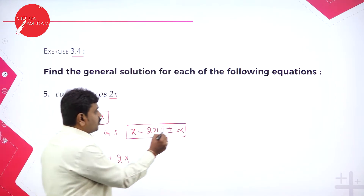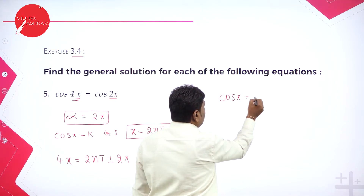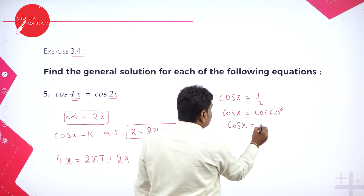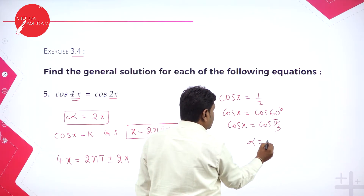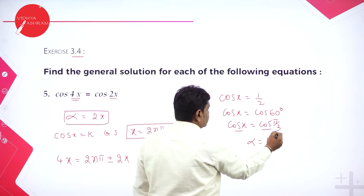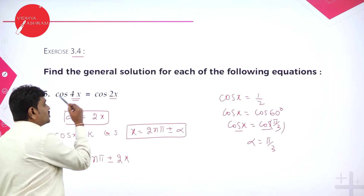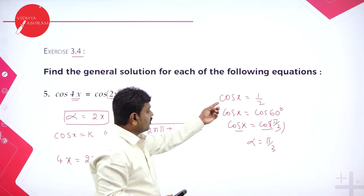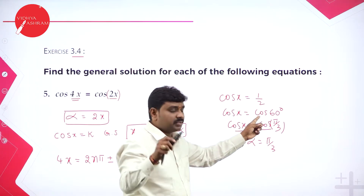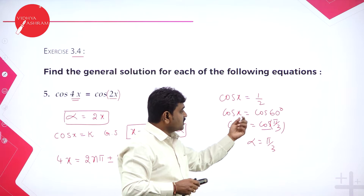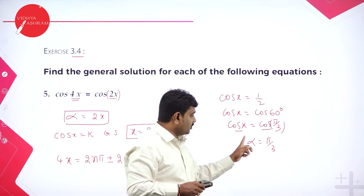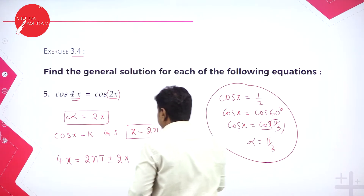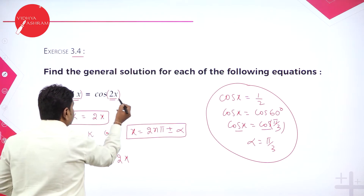To clarify: if cos x equals one-half, you can write this as cos x equals cos 60 degrees, or cos pi by 3, so alpha is pi by 3. Here cos equals cos of some angle. Similarly, they gave cos 4x equals cos 2x, so in place of alpha you directly have 2x. So cos 4x equals cos 2x means alpha value is 2x.